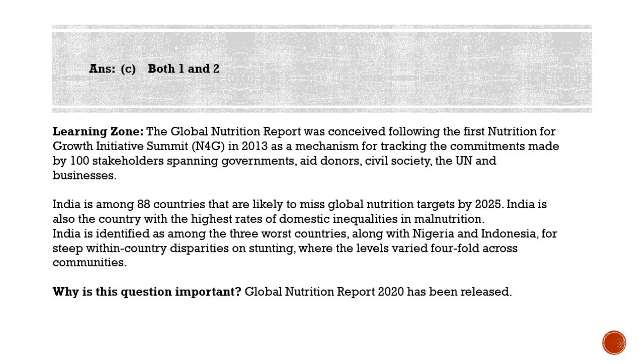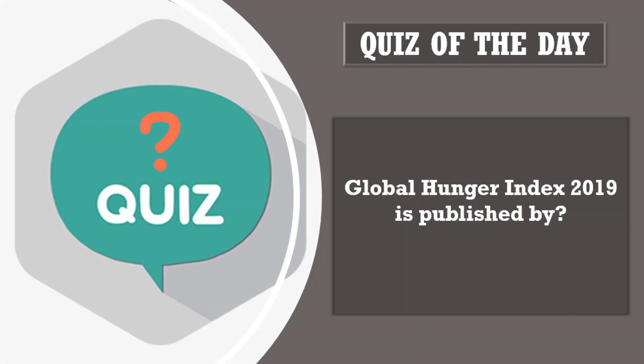It's time for the quiz question. Today's quiz question is: the 2019 Global Hunger Index is published by which organization? Please post your answers in the comment section. That's all for today — we'll meet tomorrow with another set of questions. Please post your doubts in the comment section too. Thank you for watching.